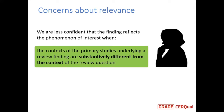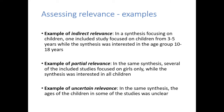We're less confident that a finding reflects the phenomenon of interest when the context of the primary studies underlying that finding are substantively different from the context of the review question. There are a lot of different possible variations here. One might be indirect relevance — for example, you have a synthesis focusing on children aged 10 to 18 years, but you can't find studies from children that age, or you have some studies from children in a different age group. You'd have to judge how important that indirectness is.